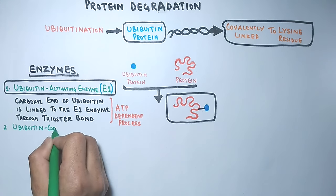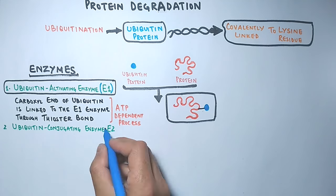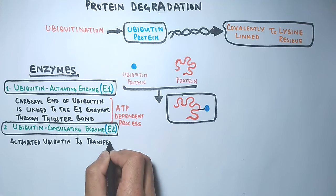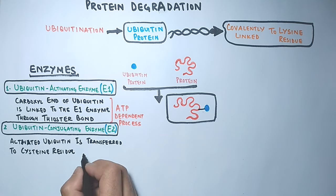Then we have ubiquitin conjugating enzyme E2 which transfers the activated ubiquitin from E1 towards the cysteine residue of E2 enzyme.